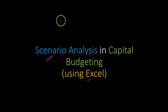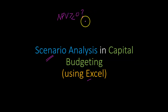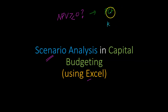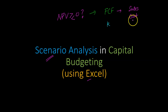The idea behind scenario analysis is rather simple. Whenever we're doing capital budgeting, we're interested in figuring out whether a long-term investment has a positive or a negative NPV. Our NPV, in turn, depends on what are the underlying financial cash flows and whatever is the discount rate, which we'll denote by the symbol K. Financial cash flows depend on our sales estimates, cost estimates, capital expenditures, changes in networking capital, and so on.